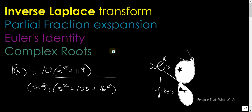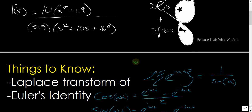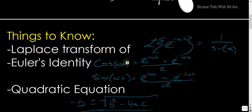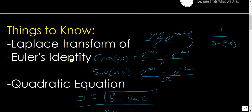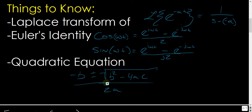All right, how are you guys doing? We're going to do this equation right here, which involves inverse Laplace transforms, partial fraction expansion with complex roots, and it involves Euler's identity. Some things you'll need to know just from the jump is you'll need to know how to do a Laplace transform of E to the minus AT. You'll need to know Euler's identity, which is cosine omega T equals E to the J omega T plus E to the minus J omega T over 2, and sine is about the same thing, except you have this minus sign right here, and you have J2 on the bottom. And I think something we all know by now is the quadratic equation.